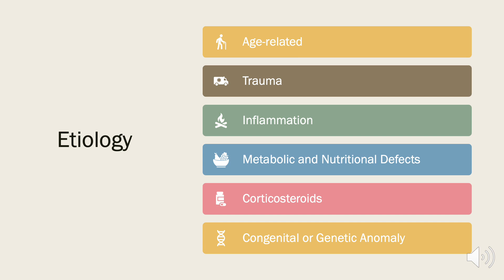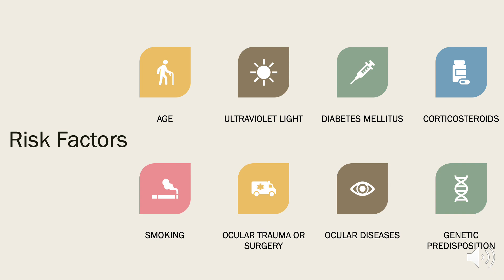The most common cause of cataract is age-related. Other factors include trauma, inflammation, metabolic and nutritional defects, and the use of corticosteroids. Some cataracts can occur as a result of a congenital or genetic anomaly. Risk factors for cataract development include increasing age, UV light exposure, diabetes, corticosteroids, smoking, history of trauma to the eye or surgery, certain eye diseases such as uveitis, and a genetic predisposition.